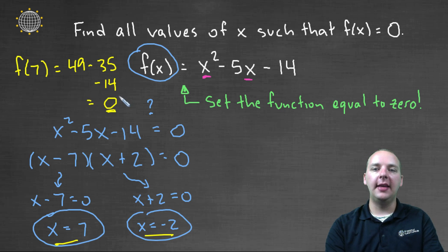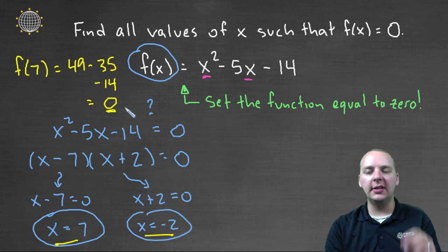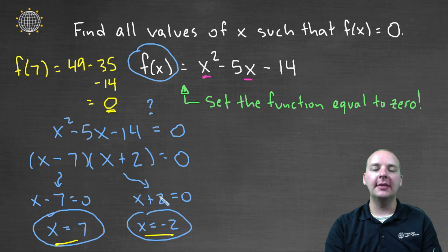You found the x that gave you zero for your function. So just remember, when you see an example like this, we're going to set the function equal to zero and then solve for the x's that would make the equation be zero.